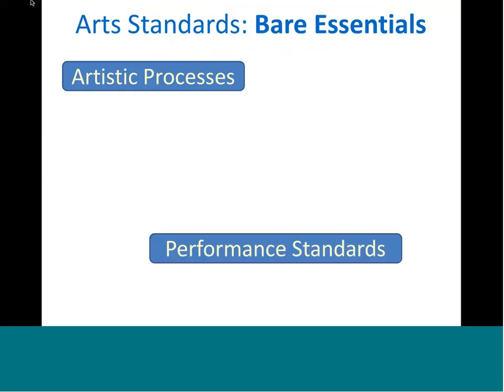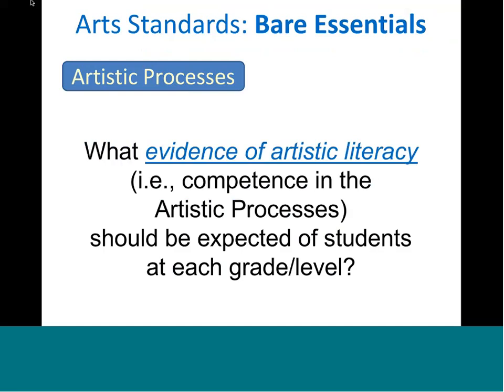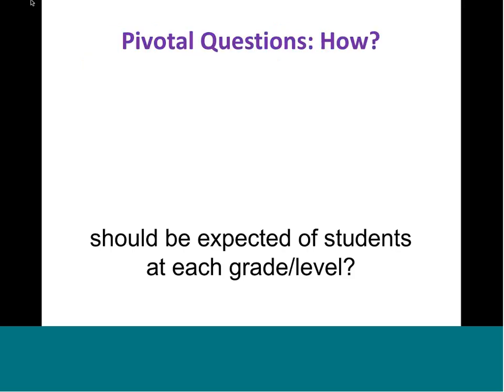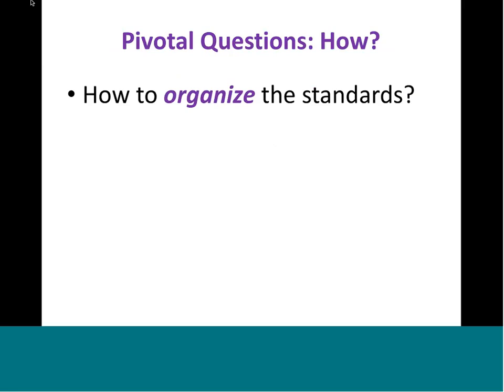So here are our bare essentials again — take a deep breath. The question we were asking as we wrote each performance standard was: what evidence of artistic literacy or competence in one of the process components should be expected of students at this grade level? For example, at grade four, how well should they be able to select literature for their own performance? Now let's go to organization — I'm sorry this is moving quickly, but we have limited time.